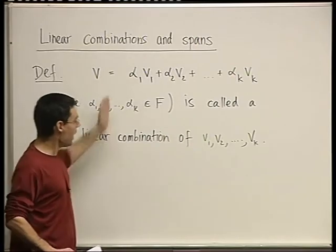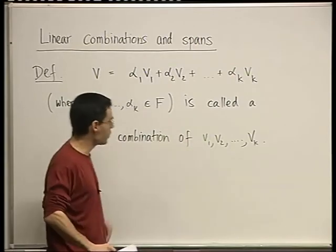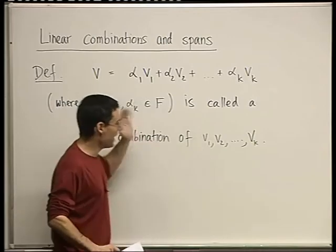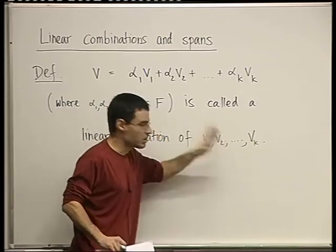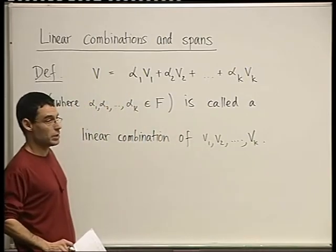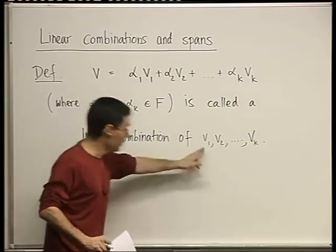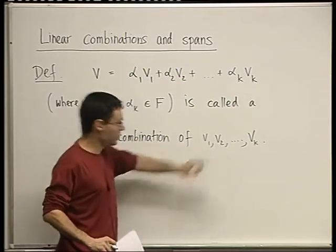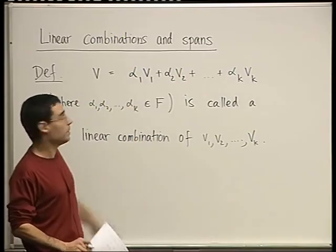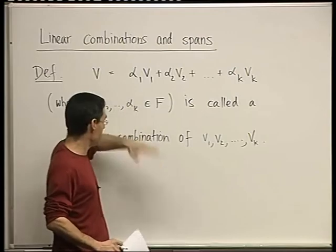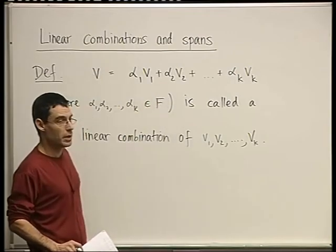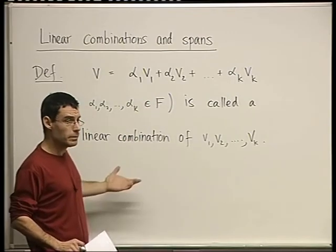And we write anything that we can write as a sum of scalar multiples of these vectors. For example, 5 times the first one plus 13 times the second one minus 6 times the eighth one — that's a linear combination. Even V1 plus V2 is a linear combination; it's 1 times V1 plus 1 times V2.